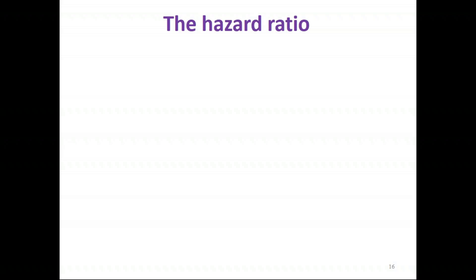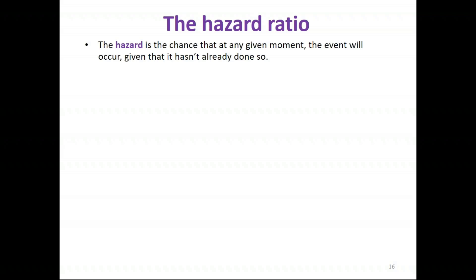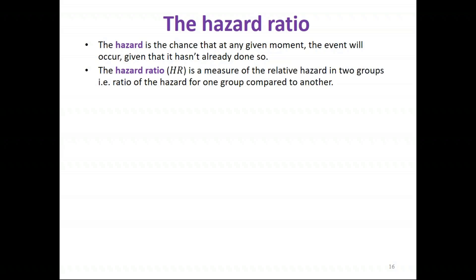When interpreting survival analyses and undertaking meta-analyses of time-to-event data, the effect measure we're primarily interested in is the hazard ratio. The hazard is the chance that at any given moment in the time frame the event will occur given that it hasn't already done so — very often referred to as the instantaneous risk of the event occurring. The hazard ratio is simply a measure of the relative hazard in two groups.